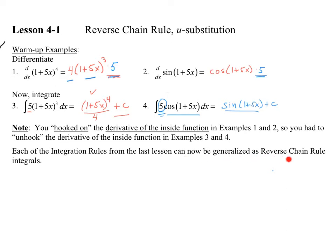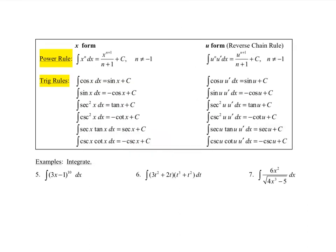Each of these integration rules from the last lesson can now be generalized as a reverse chain rule integral. The other way we say this is u-substitution — it doesn't have to be u, but u is the variable of choice most often. We rewrite the rules in u-form, and you have to include the chain to work backwards from. The u equals a chunk — a full chunk of a function, an inside piece — and then we have to sort out du as well.